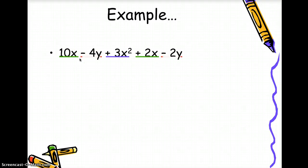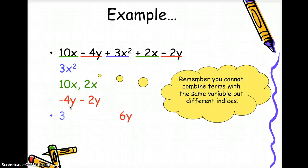And then negative 4y and negative 2y are like terms. Now, let's group them all. After you have grouped the like terms, you can now add them. 3x squared is by itself, so you will just copy it. 10x plus 2x is 12x. Negative 4y plus negative 2y is negative 6y. So this is your simplest form for the given expression.